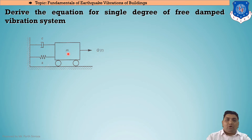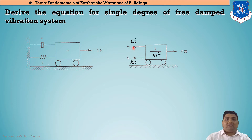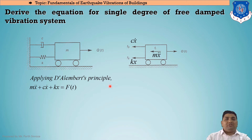The mass of the object induces the inertia force. In the free body diagram, the total force is F(t), and the three forces acting in the opposite direction are: inertia force Mẍ, spring force Kx, and damping force Cẋ. According to D'Alembert's principle, the equation of motion is Mẍ + Cẋ + Kx = F(t).